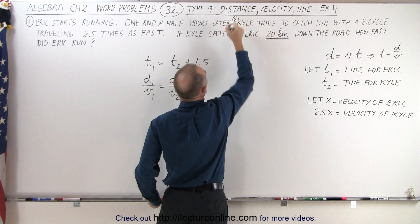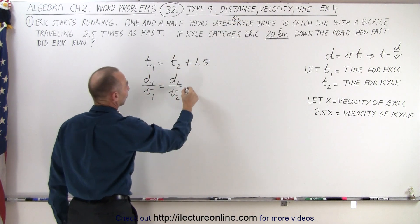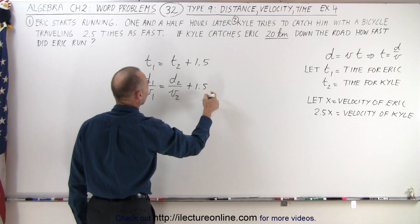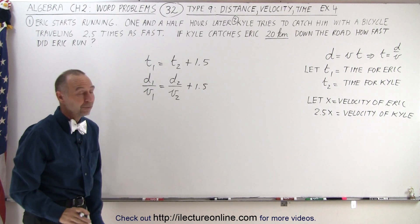is the information for Kyle, and then of course plus 1.5. So that's what our equation then becomes.